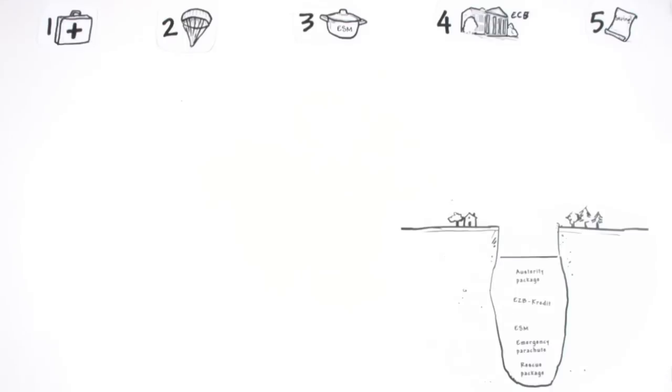So, the bailout package, the parachute, the European stabilization mechanism, credits from the European Central Bank, and financial cuts by the Greek government are supposed to fill the big fat Greek crater.